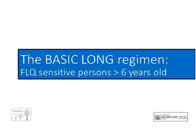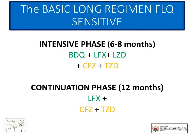Let us move on to our basic long regimen. This regimen is for both adults and children over six years, and a modified version is used in children under six. Remember, these patients must be fluoroquinolone-sensitive — RIF-resistant or MDR-TB patients — but they may have more complicated resistance patterns, be very ill, or have been exposed to MDR-TB drugs in the past. The intensive phase is made up of the three Group A drugs — bedaquiline, levofloxacin, and linezolid — as well as the two Group B drugs — clofazimine and terizidone — and those five drugs are given for the full six months.